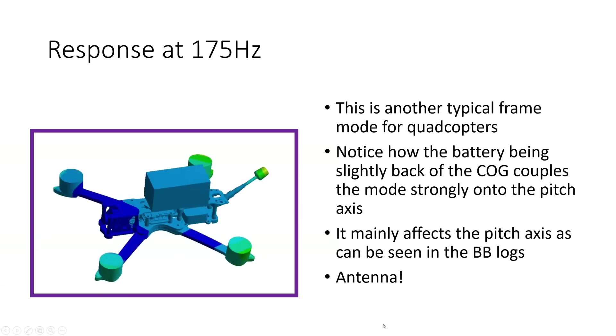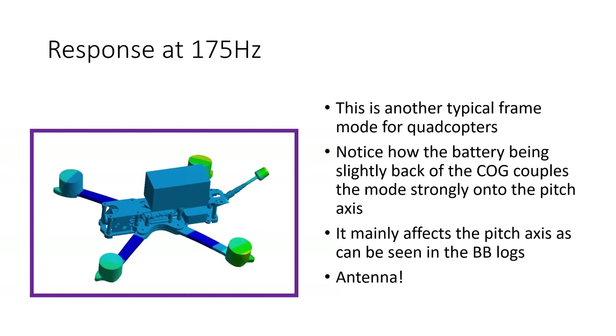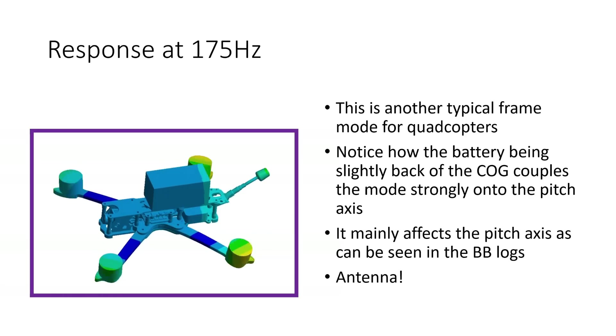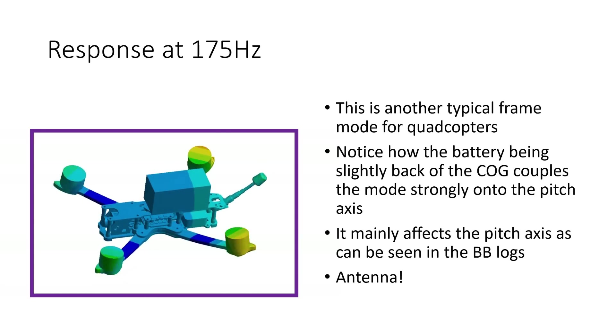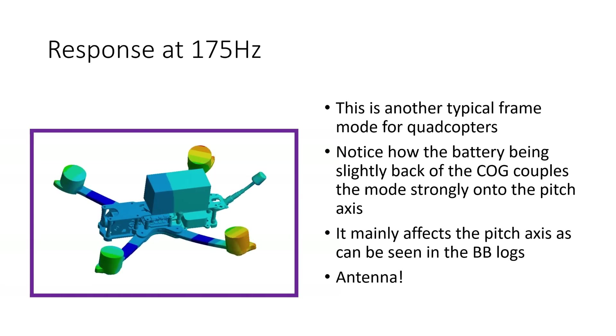If we look now at the response at 175 hertz, this is another very typical frame mode for quadcopters. Here we just have all of the motors moving together up and down and the quad is kind of bouncing up and down in the air. Notice how the battery being mounted slightly back of the COG, that's the center of gravity, couples the mode strongly onto the pitch axis because by that center of gravity being moved slightly back, now that bouncing mode is combined with a tilting of the quad forward and back which is going to be picked up by the pitch axis of the gyro. And this really matches with what we see in the black box logs where this mode is not visible on the roll axis really at all but quite strongly visible on the pitch axis and it's all because that COG isn't quite centered.